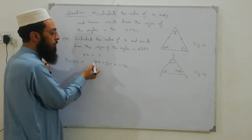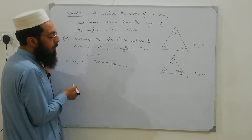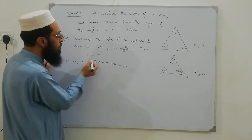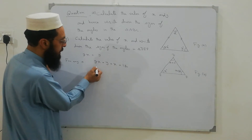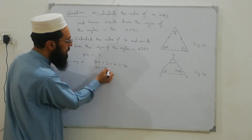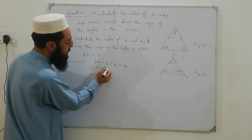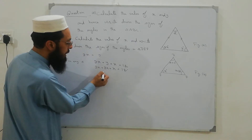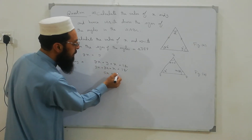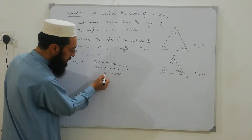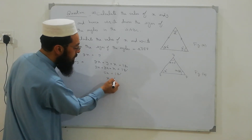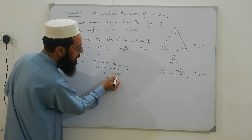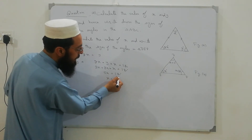So 2x plus y plus x degrees is equal to 180 degrees — this angle is 2x, this is y, and this is x. From point one we know that y is equal to 2x, so substituting: 2x plus 2x plus x equals 5x, which is equal to 180 degrees. Dividing both sides by 5.